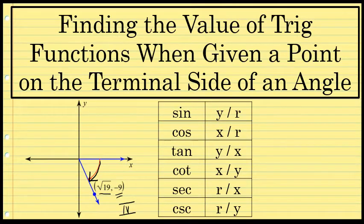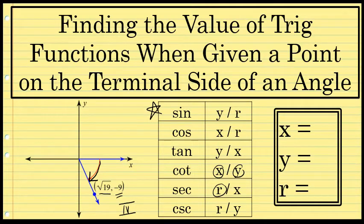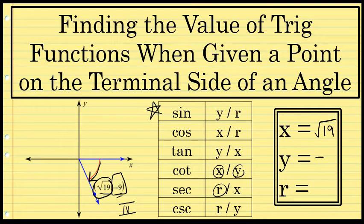You can be reminded of the trig ratios by looking at this table. You can see that all of these ratios are in terms of x, y, and r — some combination of x, y, and r. So what this problem boils down to is identifying the values for x, y, and r for this angle. In this case, x is √19 (the x-coordinate of the point on the terminal side), and y is -9 (the y-coordinate).